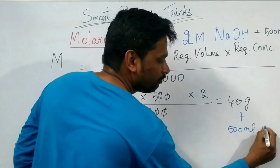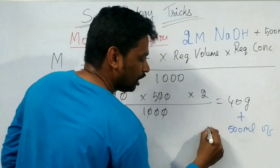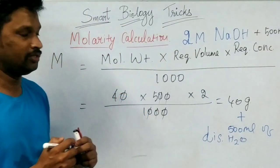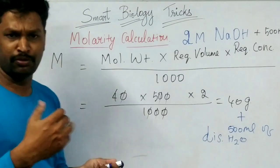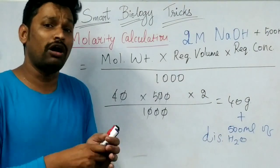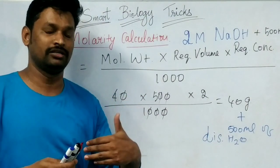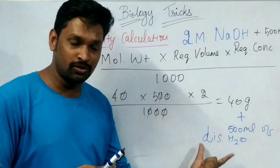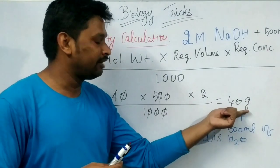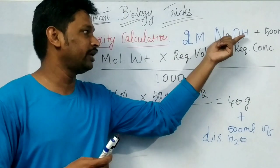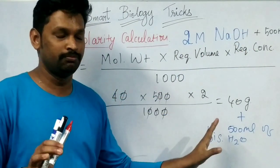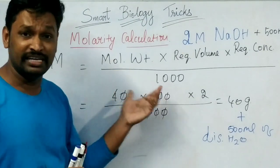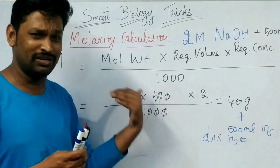Take 500 ml of distilled water and prepare the solution. Some protocols will mention in what solution you have to mix it. In that case, you take the specific solution and mix 40 grams of sodium hydroxide into it. It is very simple — you just need to understand and memorize the formula.